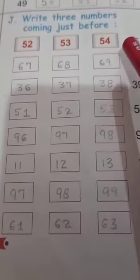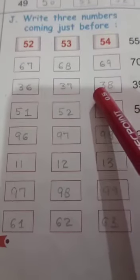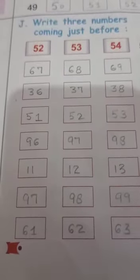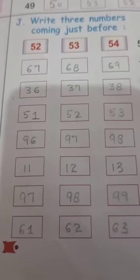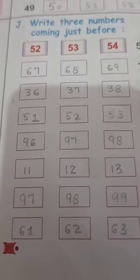So in the last exercise, we just have to write the counting in reverse order from the last according to the given number. Ok, so in the last exercise, we have to write three numbers coming just before. Ok.